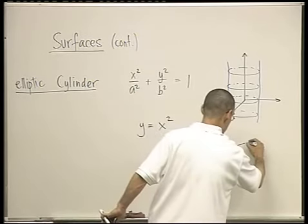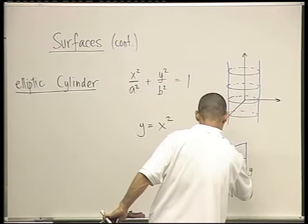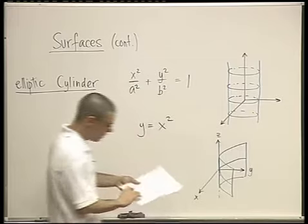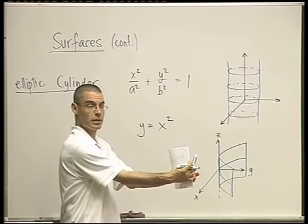So what you should picture, all in all, is again, this shape here. Here it is. It's this thing. Do you see it? It's a parabola, but it's sitting here, and it's the same parabola for every z.